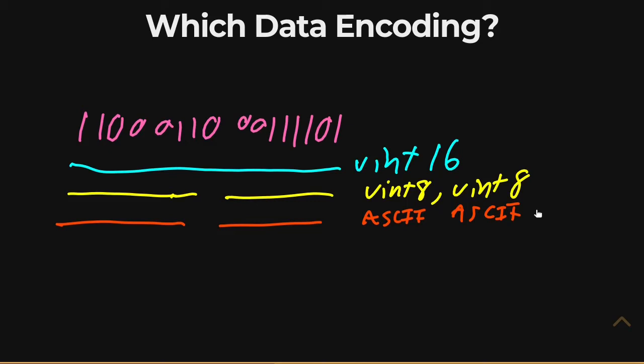Or we could say, you know what? That's not right either. This is actually a single UTF-16 character. Or half of a single floating point number, or half of a UTF-32 character. The problem is, the question is, which of these is it? Which data encoding is this sequence of 1s and 0s?